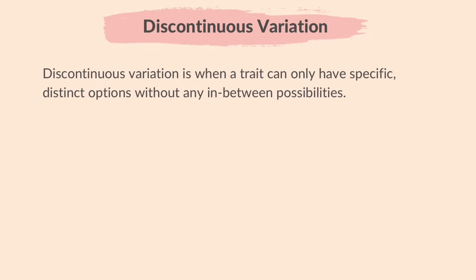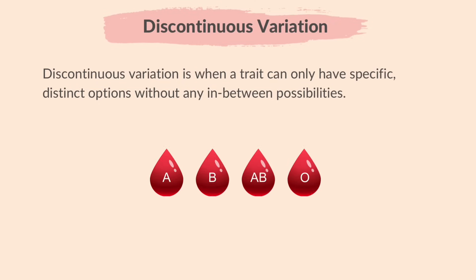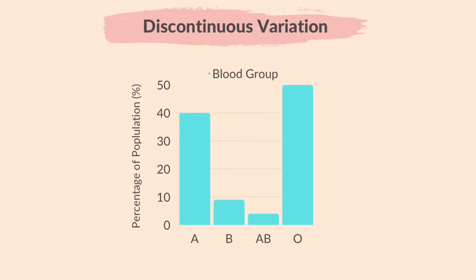Discontinuous variation is when a trait can have only specific, distinct options without any in-between possibilities — it's like having clear categories or groups for a particular characteristic. For example, when we consider blood group, it can be either A, B, AB or O with nothing in-between. It's not a smooth spectrum, but rather separate and defined options. When graphs of these data are plotted, discontinuous variation gives a step-like shape.